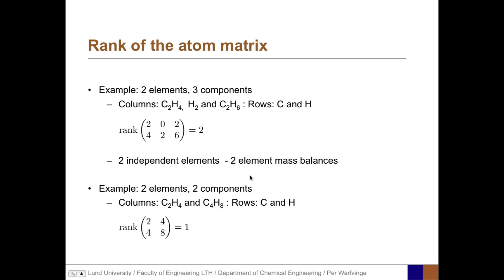In this example, we have two elements, C and H, but only two components: C2H4 and C4H8. Looking at the atom matrix, the first column is a multiple of the second column, meaning the rank is 1, because the determinant is 2 times 8 minus 4 times 4, which equals 0. The conclusion is that in this case we only have one independent element, and we can only form one element mass balance when making process calculations.